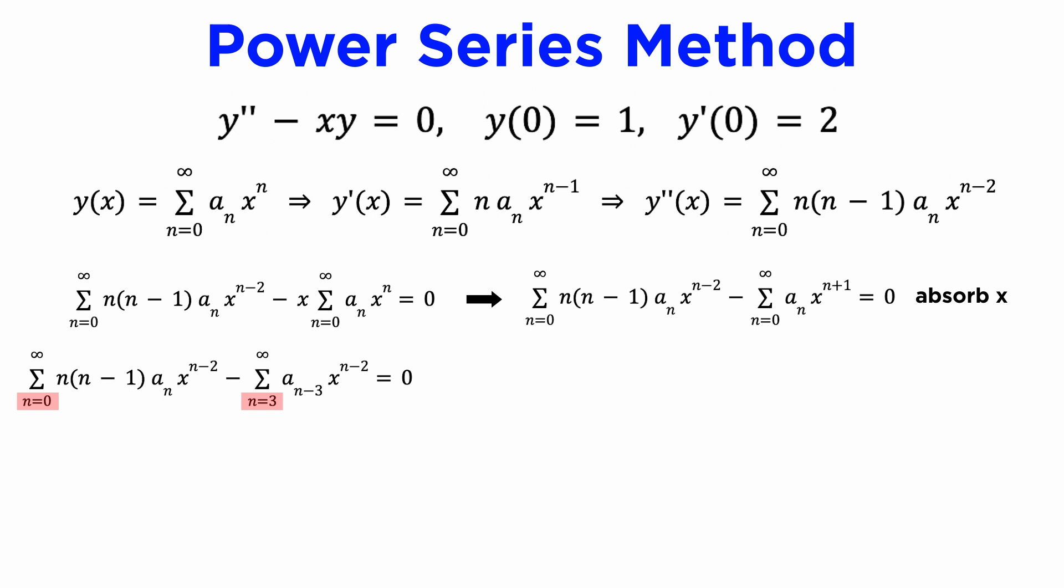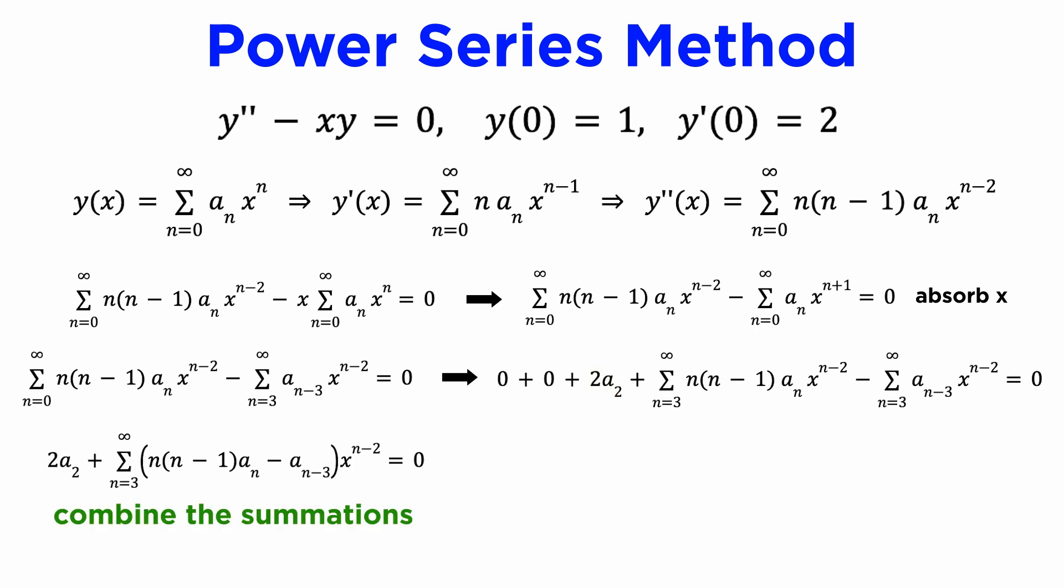Next, we need to make sure all our summations have the same starting index, which they again currently do not. In the first summation, we can pull out the first three terms corresponding to n equals zero, which gives zero, n equals one, which also gives zero, and n equals two, which gives two times a_2. Then we can combine the summations to get the following.